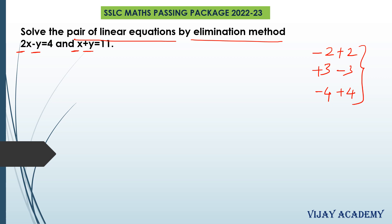So on adding these two equations, we can eliminate y. So let us add these two equations: 2x minus y equals to 4 and x plus y equals to 11.